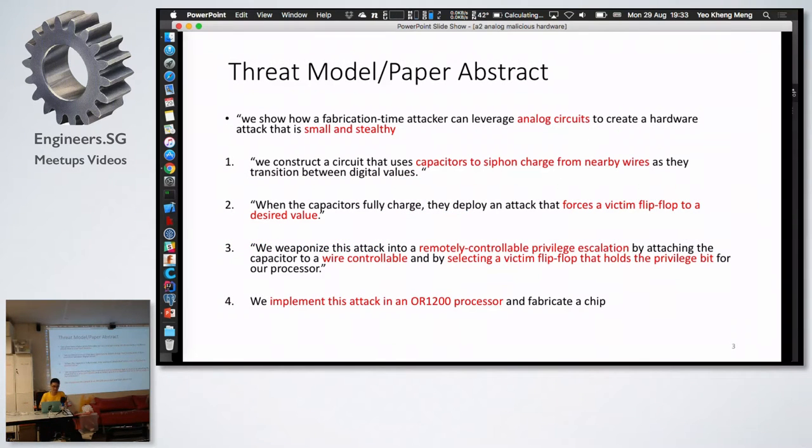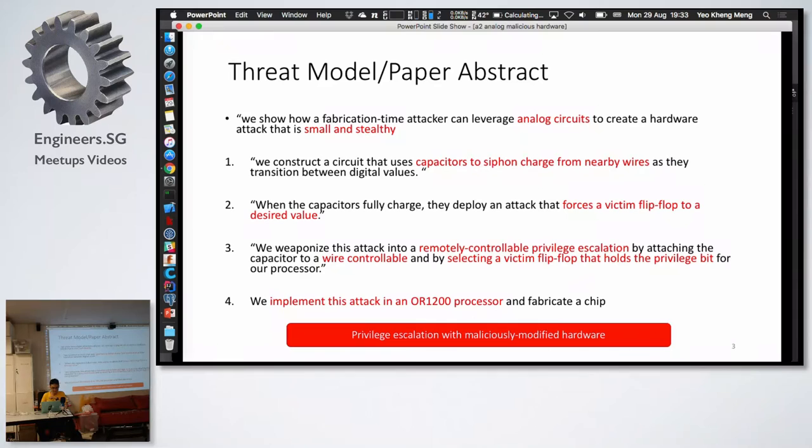So, now I go to the abstract. This paper tries to show how a fabrication time attacker can leverage analog circuits to create hardware attacks that is small and stealthy. They construct a circuit that uses capacitor to siphon charge. After that, this is used to force a victim flip-flop to the desired value. Then you can do a remotely controllable privilege escalation using this wire to select a flip-flop that holds the privilege bit. They implement this attack on the OR1200 processor. So, this is the abstract. The main idea is you want to do privilege escalation with a maliciously modified hardware.